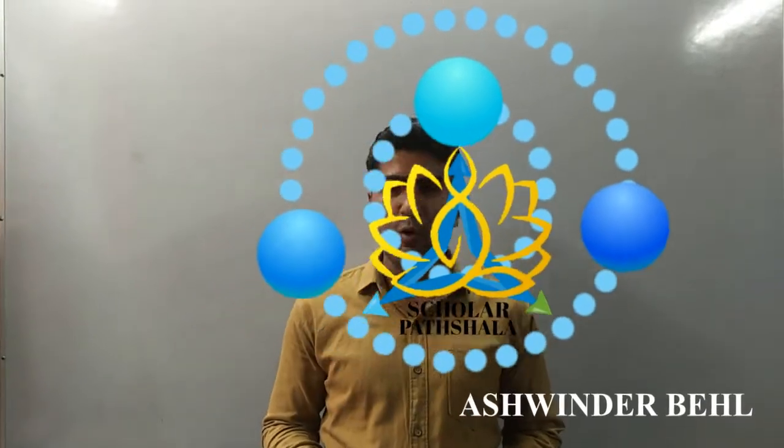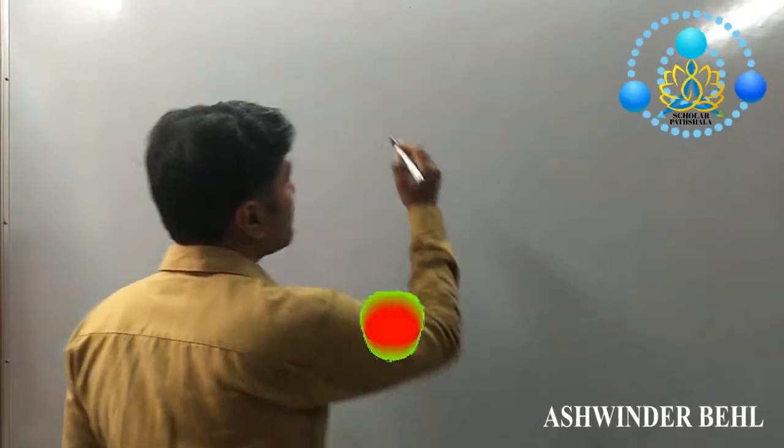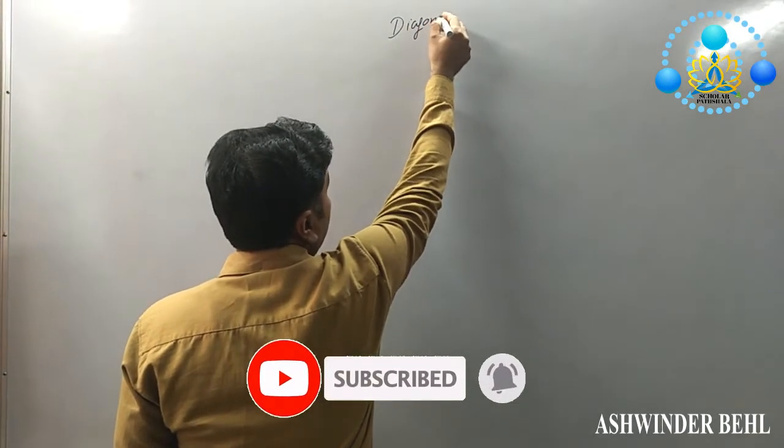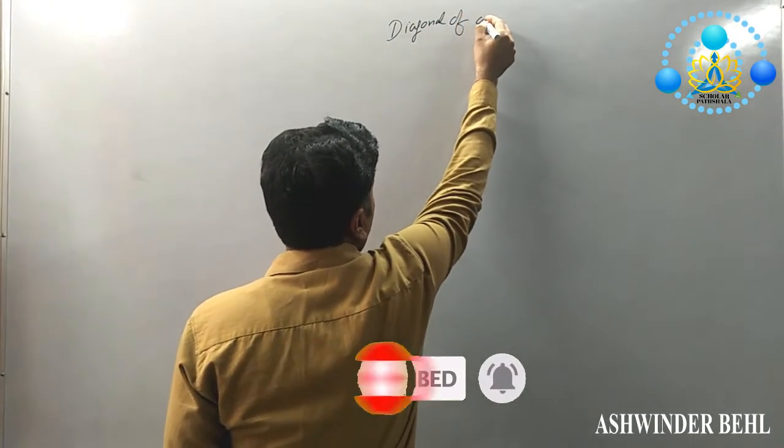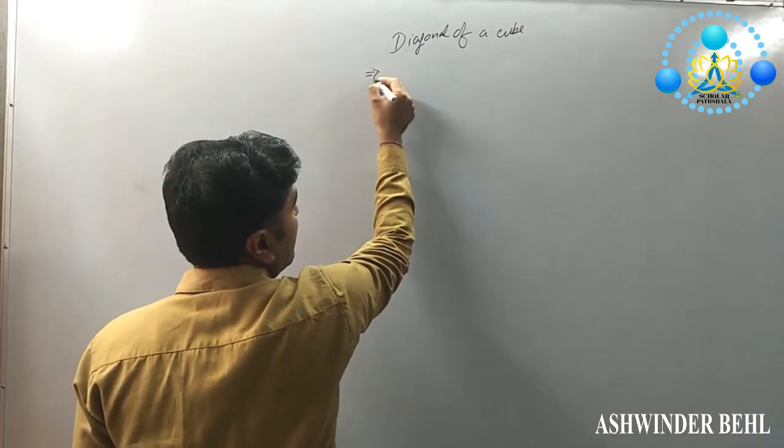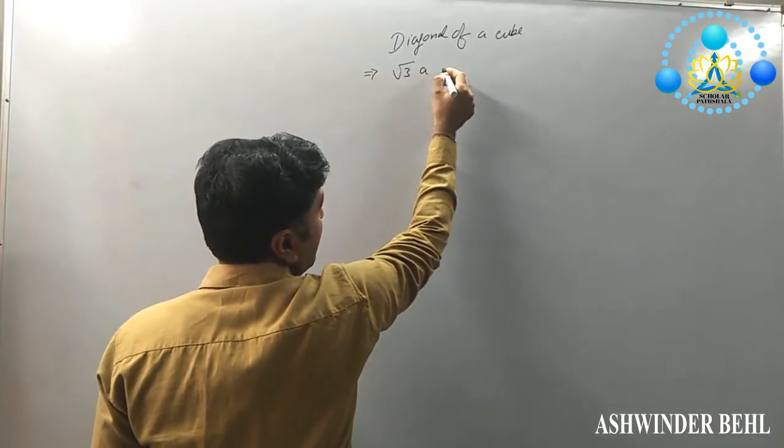Today we will discuss the diagonal of a cube. So how can we prove the diagonal of a cube? We know very well that it is √3A.